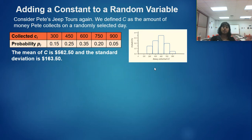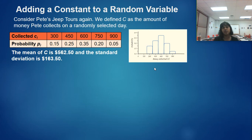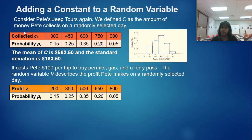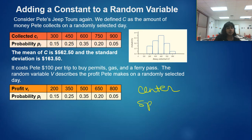Moving on — let's talk about what happens when we're adding or subtracting a constant. We're still looking at Pete's Jeep Tour, using his C value — his total collected value with the $150 per passenger. We already calculated the mean and standard deviation. But what if Pete's trip costs him $100 to run? We have to subtract 100 each time. Addition and subtraction can affect the center but will not affect the spread.